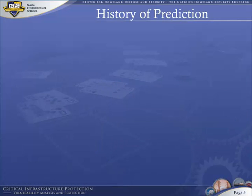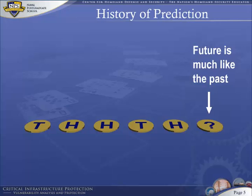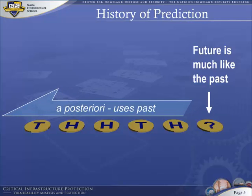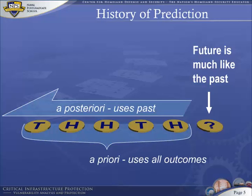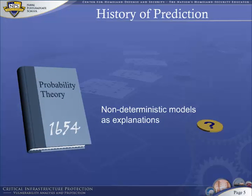A more modern idea was that events happen as a reasonable person might expect, but with some randomness or noise. That is, the future is approximately like the past, but with statistical fluctuation. These fluctuations might be reasonably approximated using a posteriori probability, or by considering all possible outcomes using a priori probability. By the 1600s, non-deterministic models began to emerge as an explanation of observed reality. Thus probability theory was born.